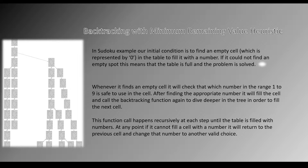This function call happens recursively at each step until the table is filled with numbers. At any point, if it cannot fill a cell with a number, it will return to the previous cell and change that number to another valid choice. This is called backtracking. You can see the game tree here — this is just a single part of the game tree.